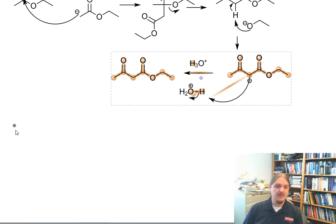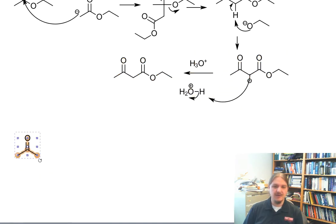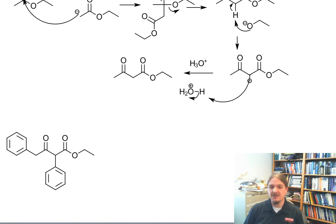If you are given the structure of a compound that was made through the Claisen condensation, let me draw something for you. You can dissect this structure much like an aldol product to identify what ester was used to synthesize this Claisen product.